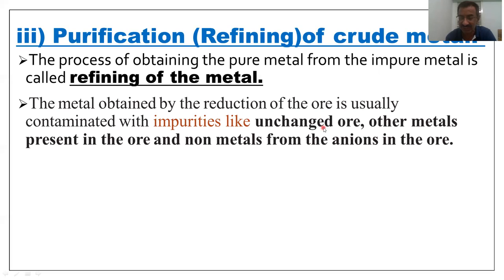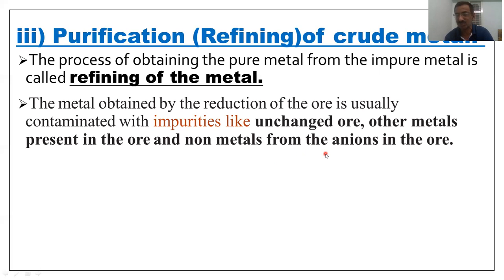The impurities include: unchanged ore — for example, unreacted ore from the reduction process. Other metals present in the ore — for example, copper iron pyrites contains iron. Non-metals present in the anions of the ore — for example, copper iron pyrites contains sulfur.